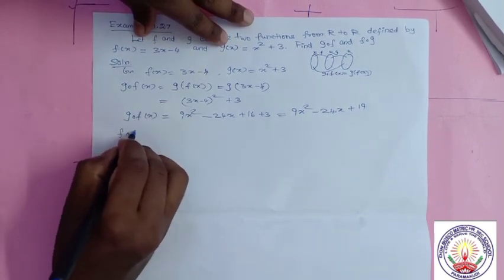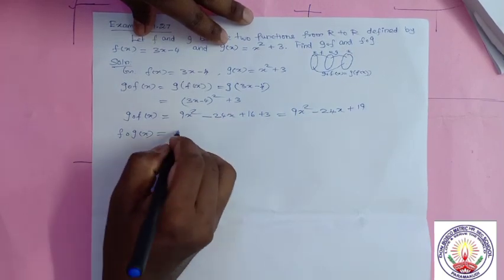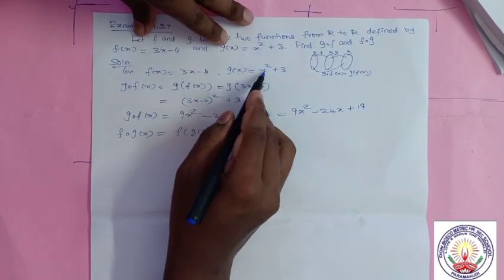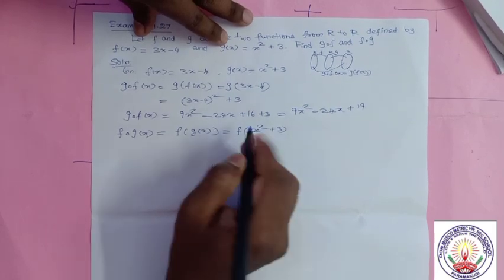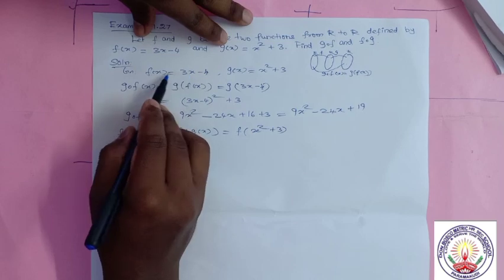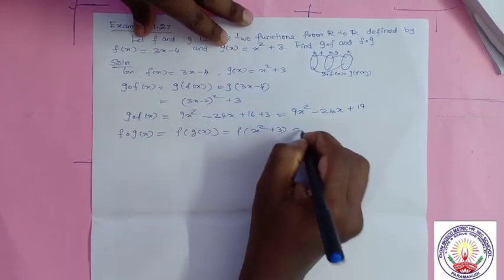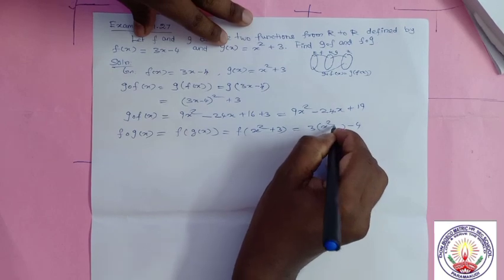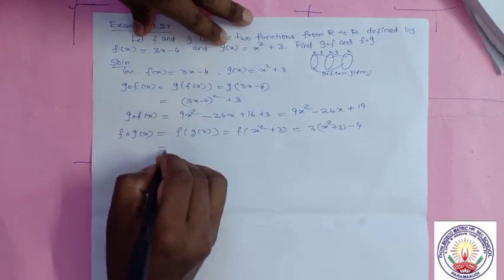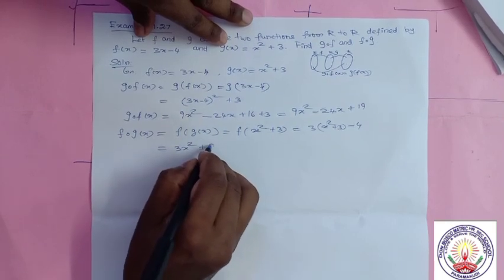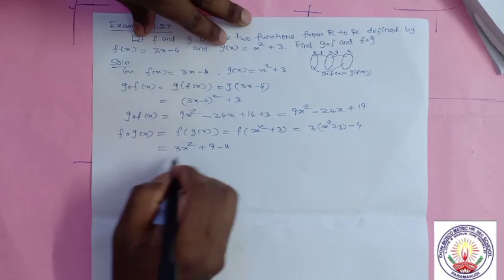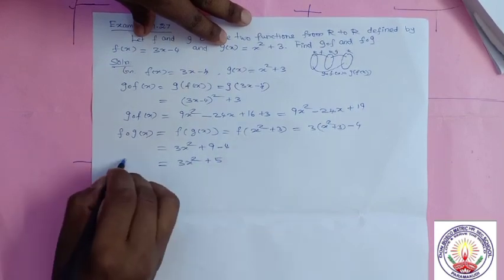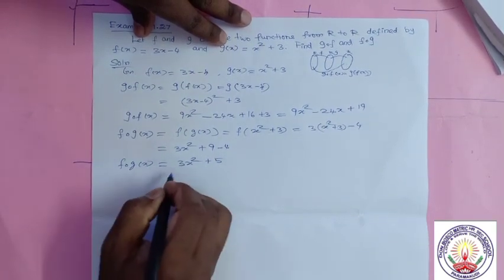Second one: f composition g of x = f(g(x)) = f(x² + 3). Now what is the work of f? Multiply by 3 then subtract 4. So we get 3(x² + 3) - 4 = 3x² + 9 - 4 = 3x² + 5. So f∘g(x) = 3x² + 5.